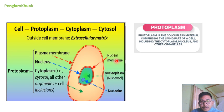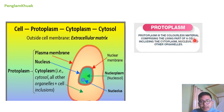Protoplasm is the colorless material comprising the living parts of the cell, including the cytoplasm, nucleus, and other organelles.